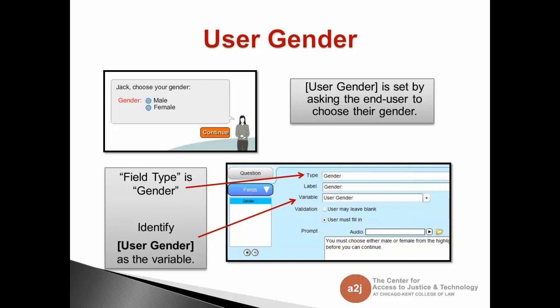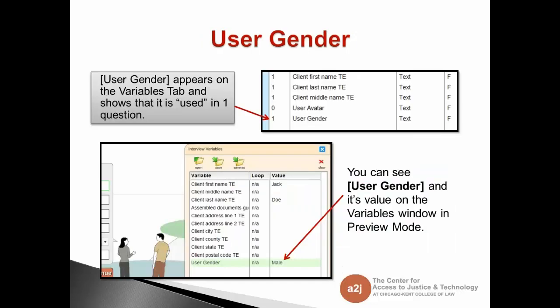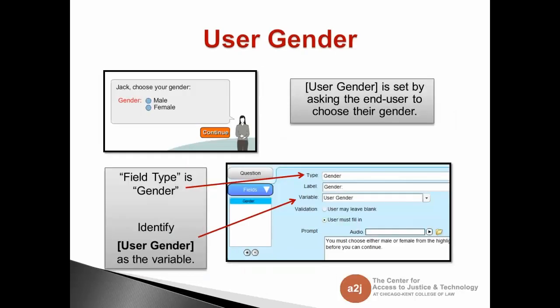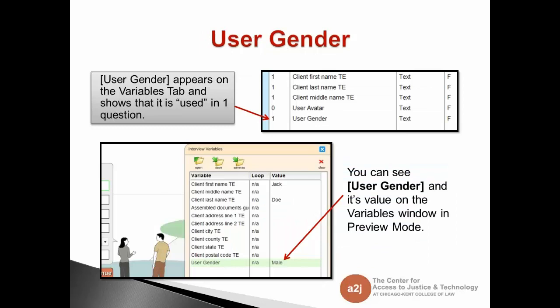The gender question is not mandatory. There's been talk in the community about gender sensitivity in some doc assembly projects. If you don't want users to select their gender, you can always have no avatar, and it'll just be the female guide. You can always leave out the gender question — you just won't have an end user avatar. This variable appears in the variables tab and in preview mode interview variables, and it shows up as used because it actually is used.